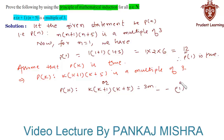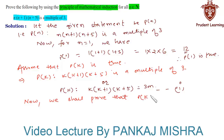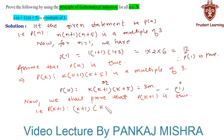In our final step, we shall try to prove that P(k+1) is also true for the given statement. P(k+1) is such that (k+1) times (k+1+1) times (k+1+5), which is (k+1) times (k+2) times (k+6).